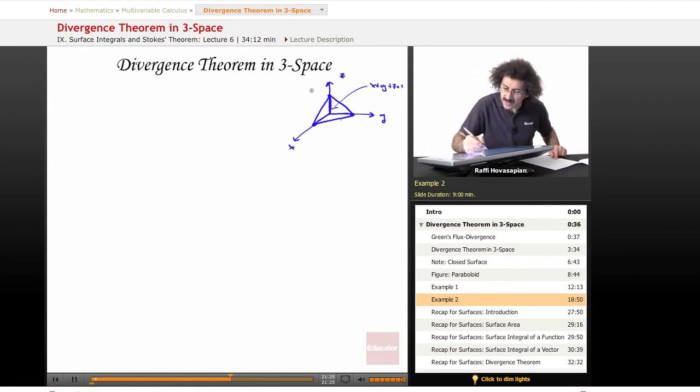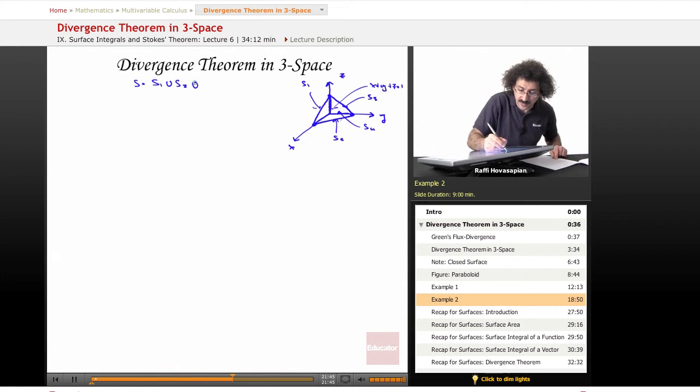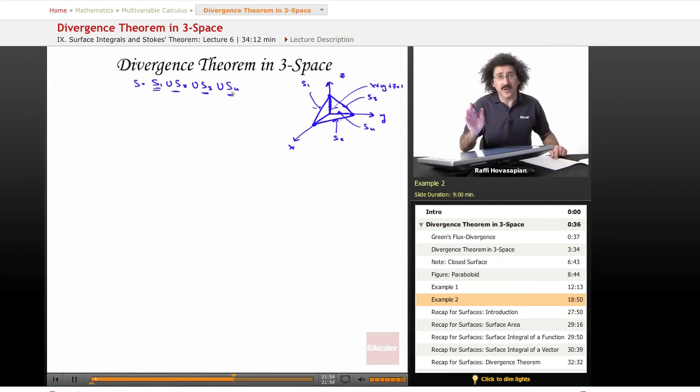Let me actually label these. This is going to be surface one, this is going to be surface two, the back is going to be surface three, and this plane is surface four. So again, our surface is the union of all these surfaces. If we wanted the integral over this, we have to do one, two, three, four integrals. We don't want to do four integrals, we want to do one. The divergence theorem is the perfect tool for this.